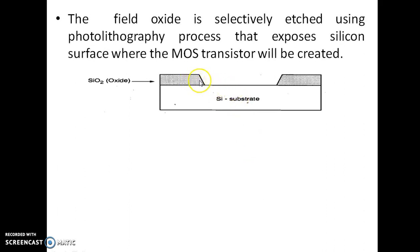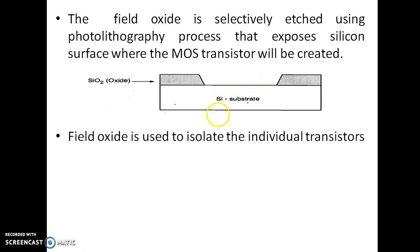Next, this field oxide is selectively etched using the photolithographic process. By using photolithography, the field oxide is selectively etched, which exposes the silicon substrate where the MOS transistor will be created. The field oxide acts as an insulator to isolate the individual transistors — NMOS, PMOS, and different types.